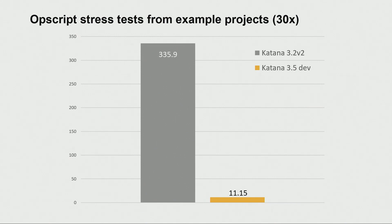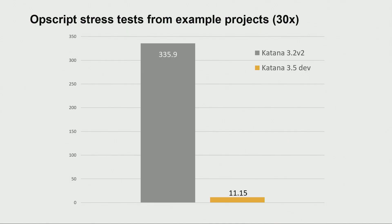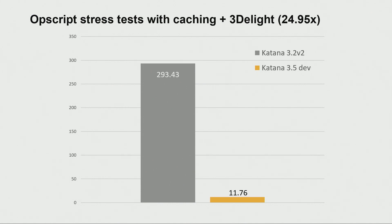Opscript — how many people here that know Katana have written some kind of Lua Opscript? On a 32-thread machine — a dual 8-core Xeon — just Opscript generating a scene graph was nearly 30 times faster. Adding a rendering plugin like 3Delight on top adds a bit of extra overhead, but it's still 25 times faster. Frankly, I'd take that.